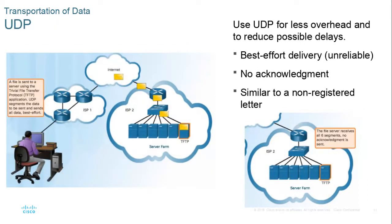UDP has less overhead — it doesn't do any acknowledgement and is unreliable. As the graphic shows, it's similar to sending a letter in the mail: the sender will never know if the receiver got it, and the receiver won't know it's coming until it arrives. So UDP is like sending a postcard; TCP is like sending a FedEx package that can be tracked and confirmed as received.